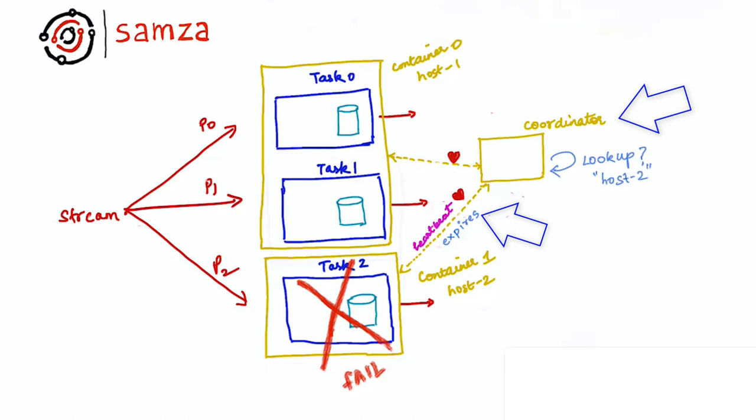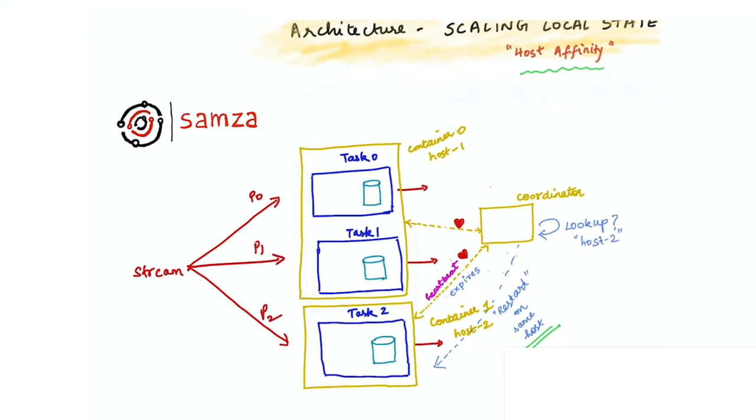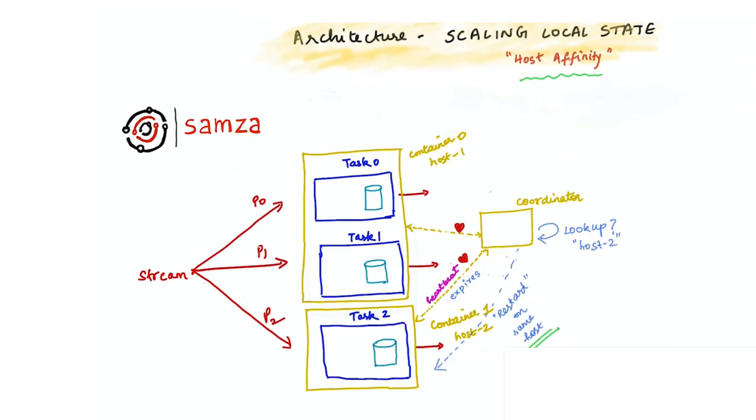The coordinator durably tracks which containers were running on which hosts and spawns the container on the same host they were running previously on. This enables the container to reuse the local state snapshot available on that host instead of bootstrapping from the change log. We call this feature host affinity because it tries to preserve the assignment of tasks to physical hosts.